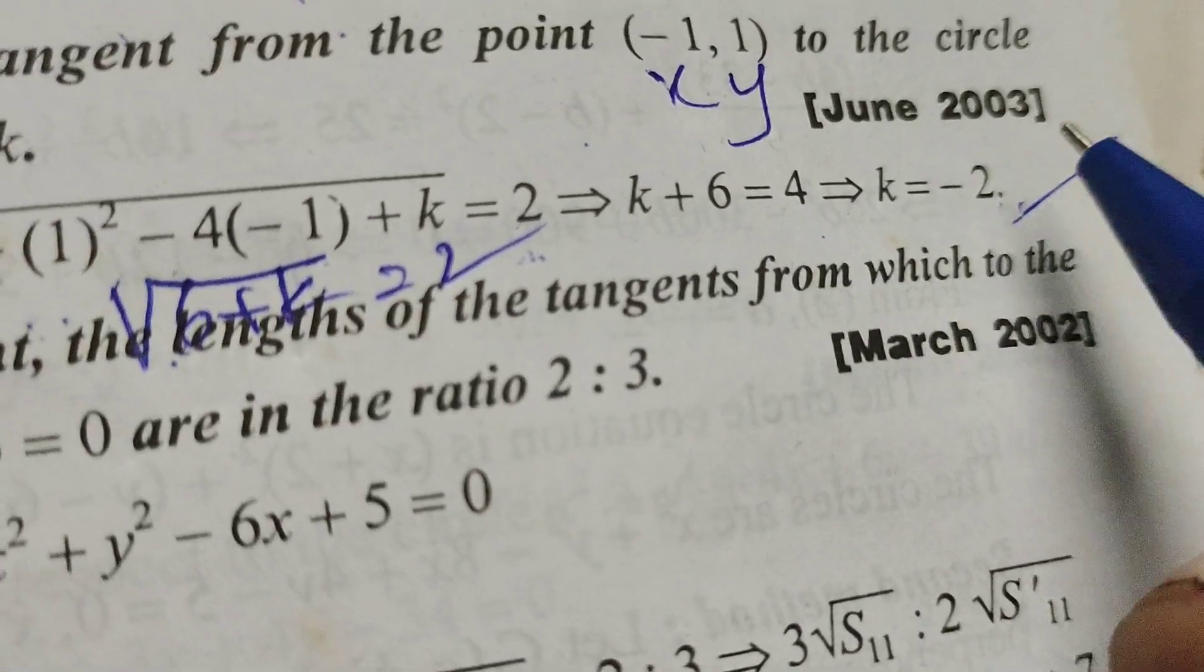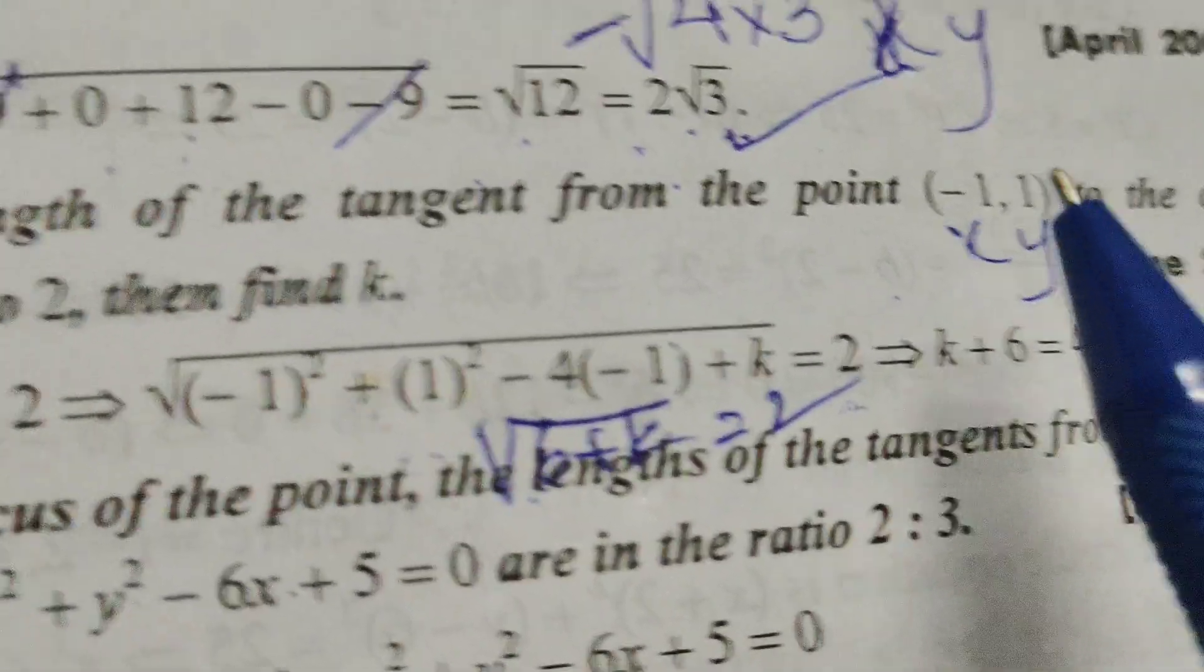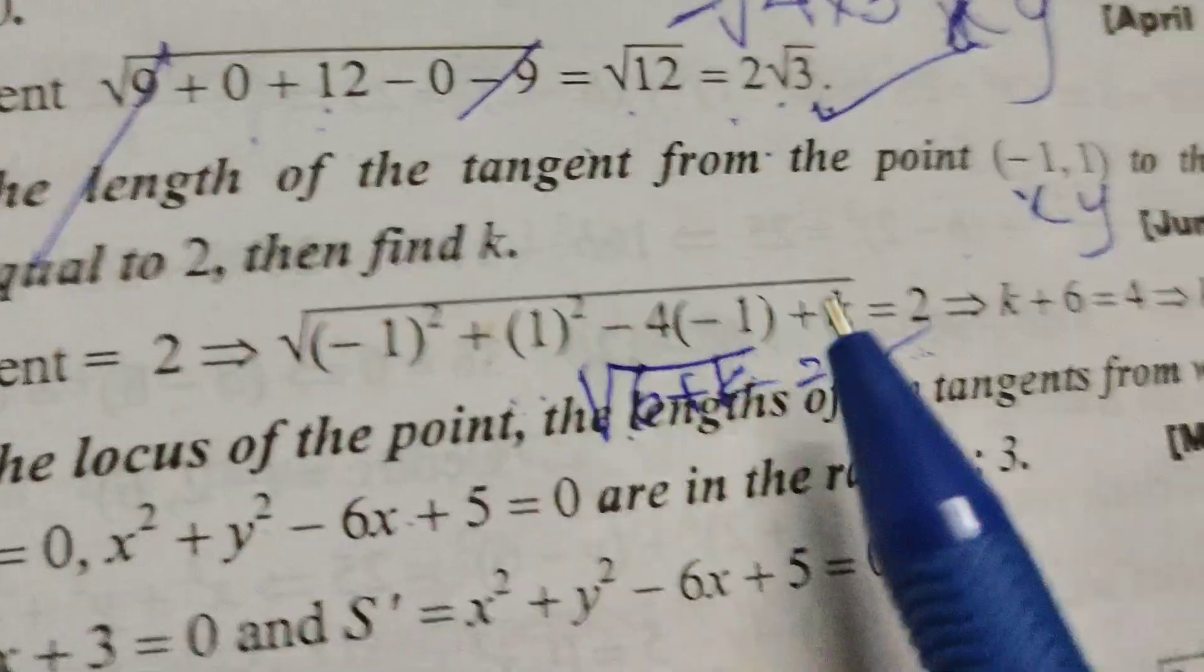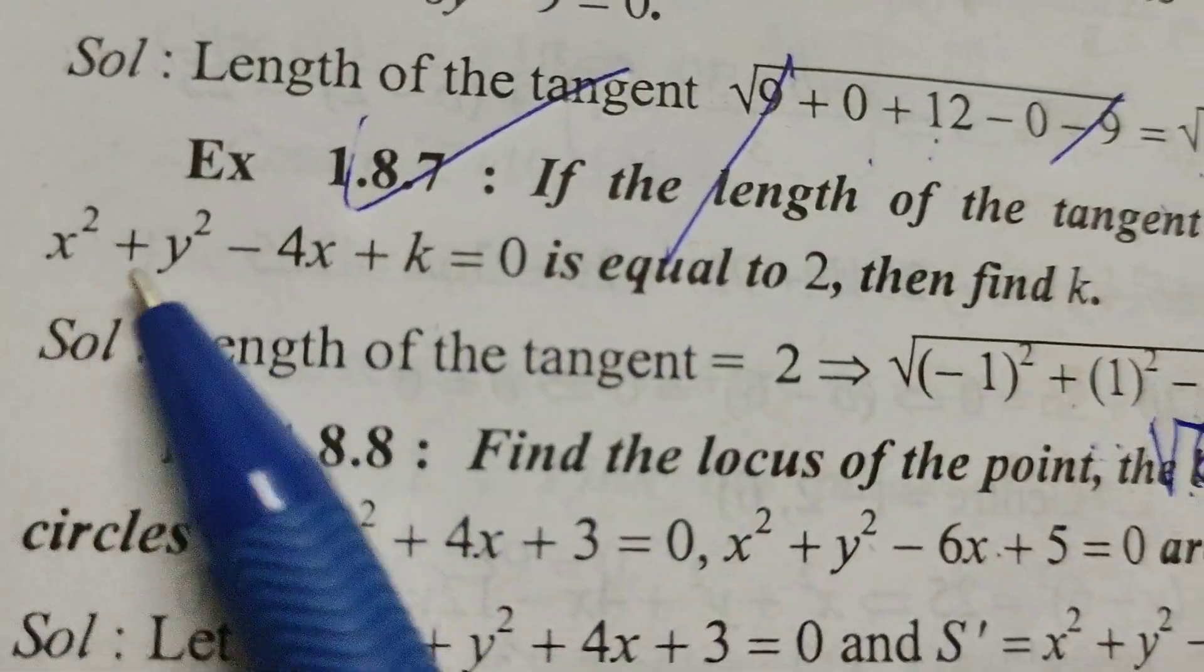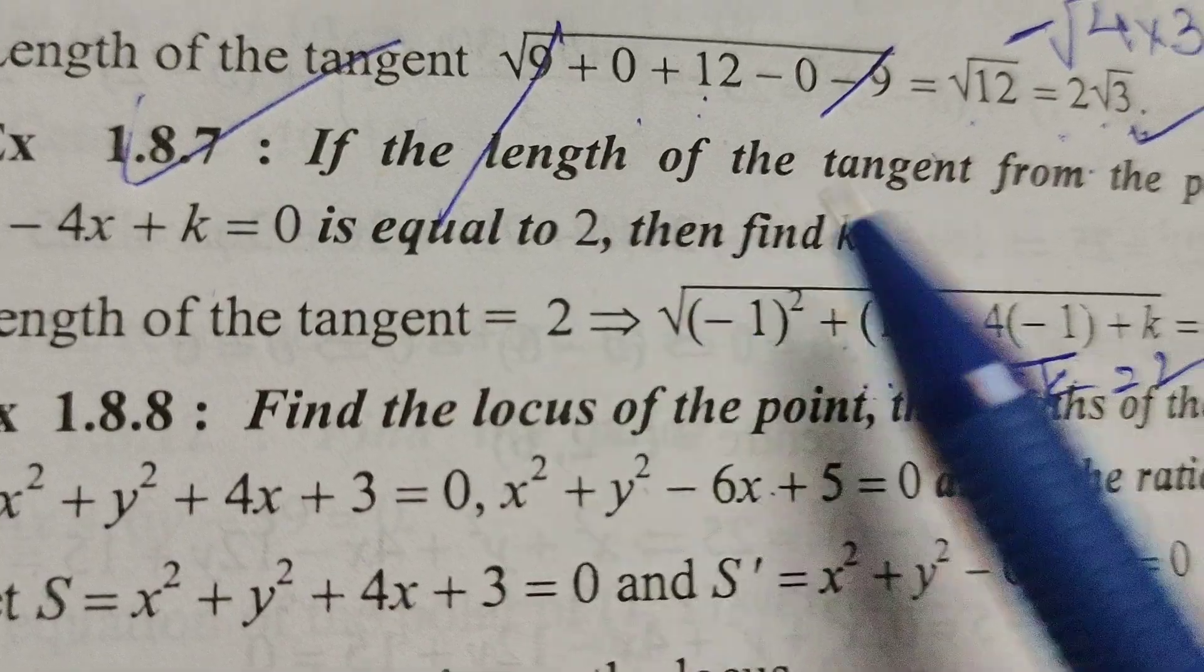k equals to minus 2 is the required value by the given length of tangent from this point equals to the circle equation. Thank you.